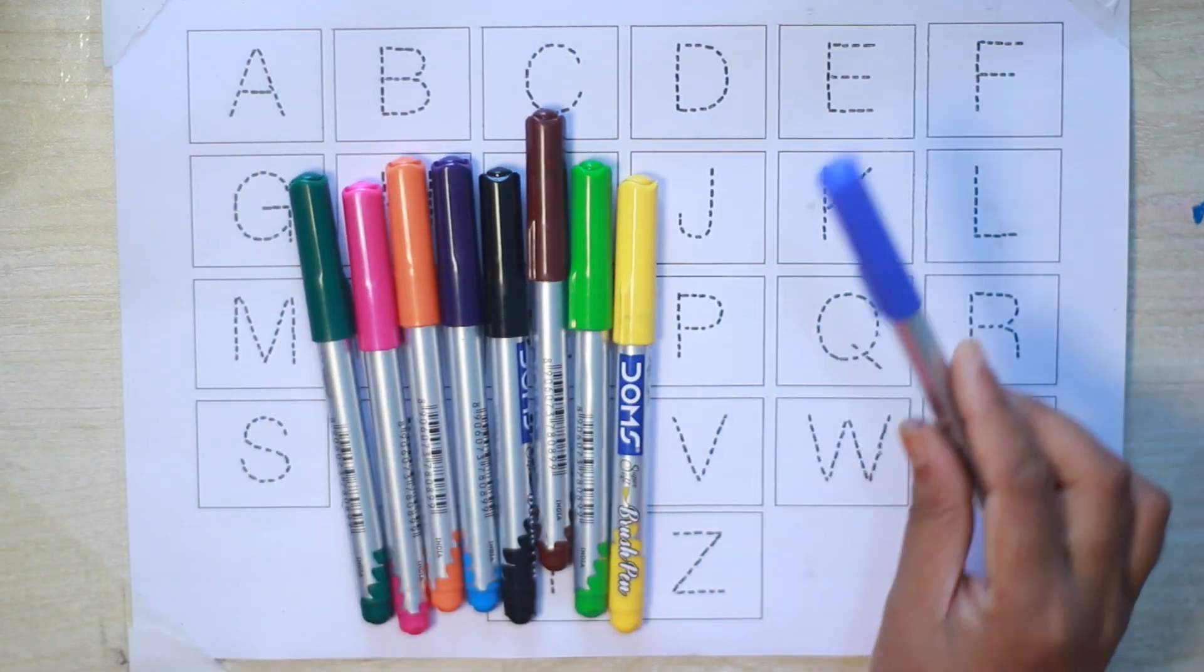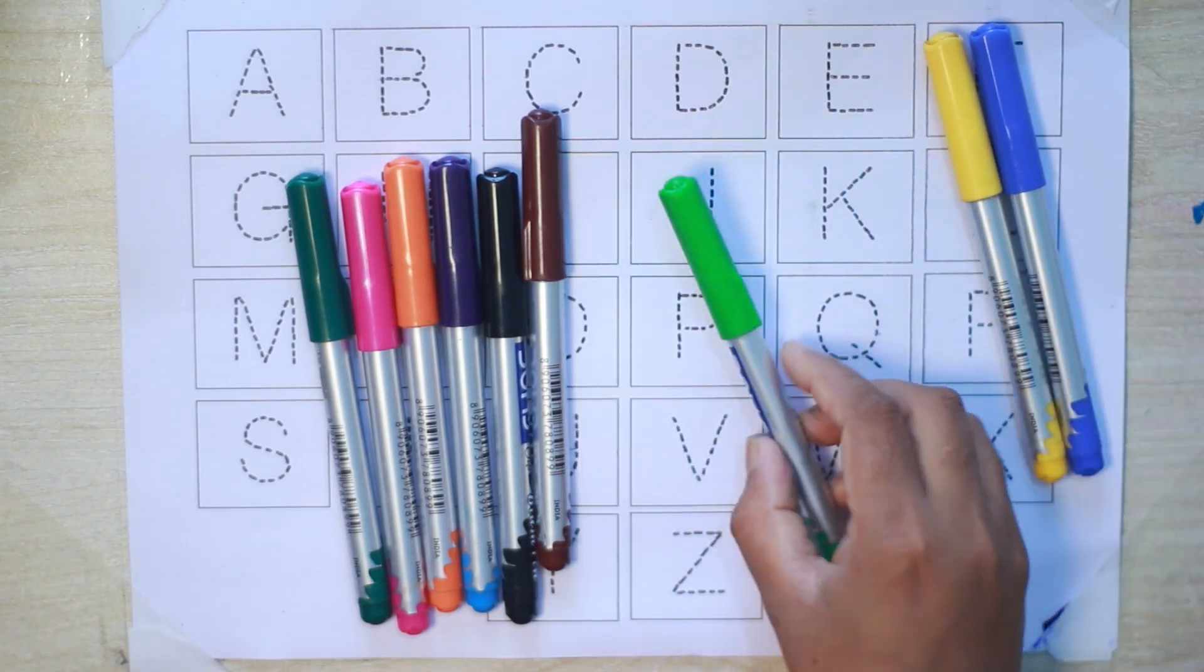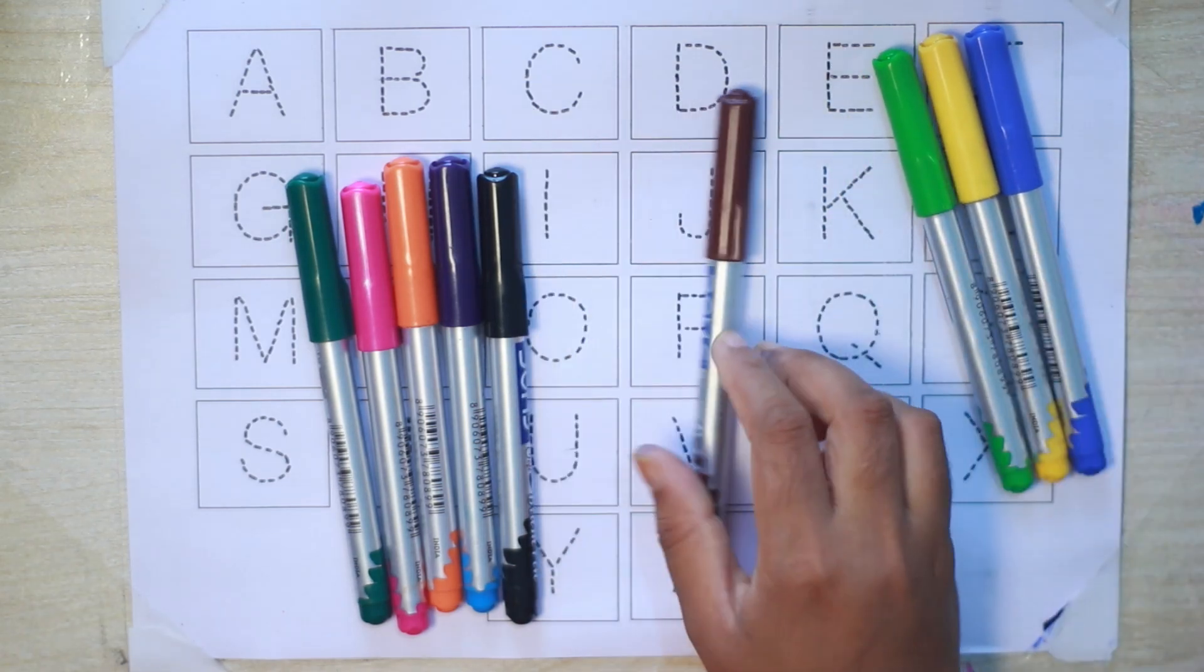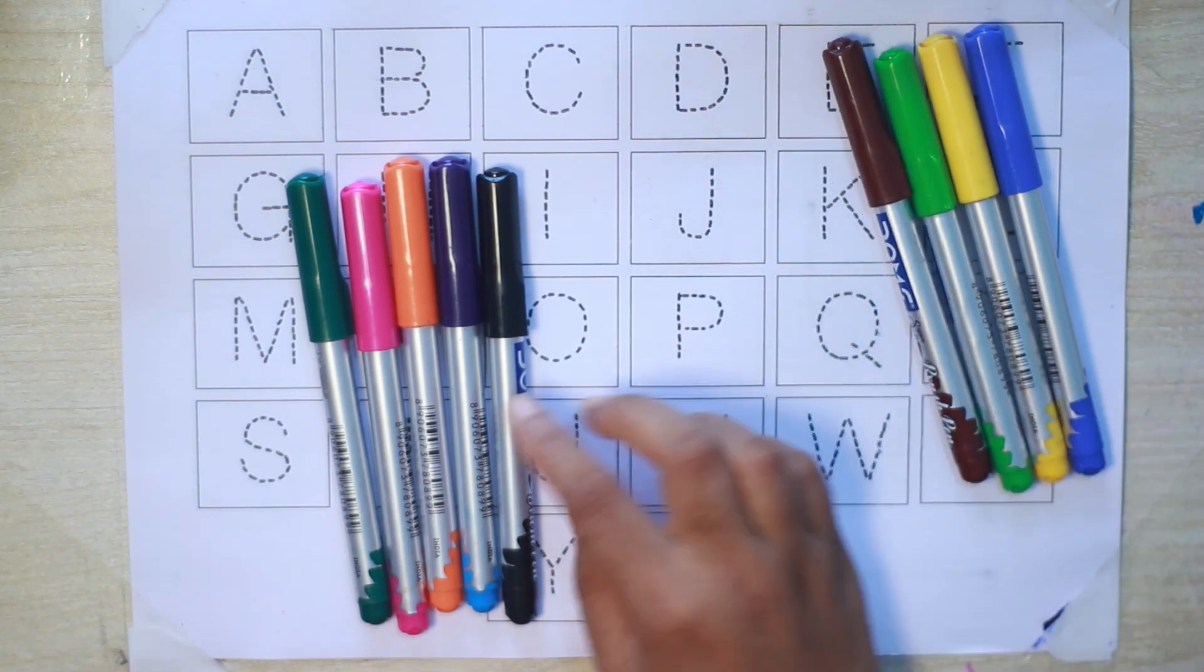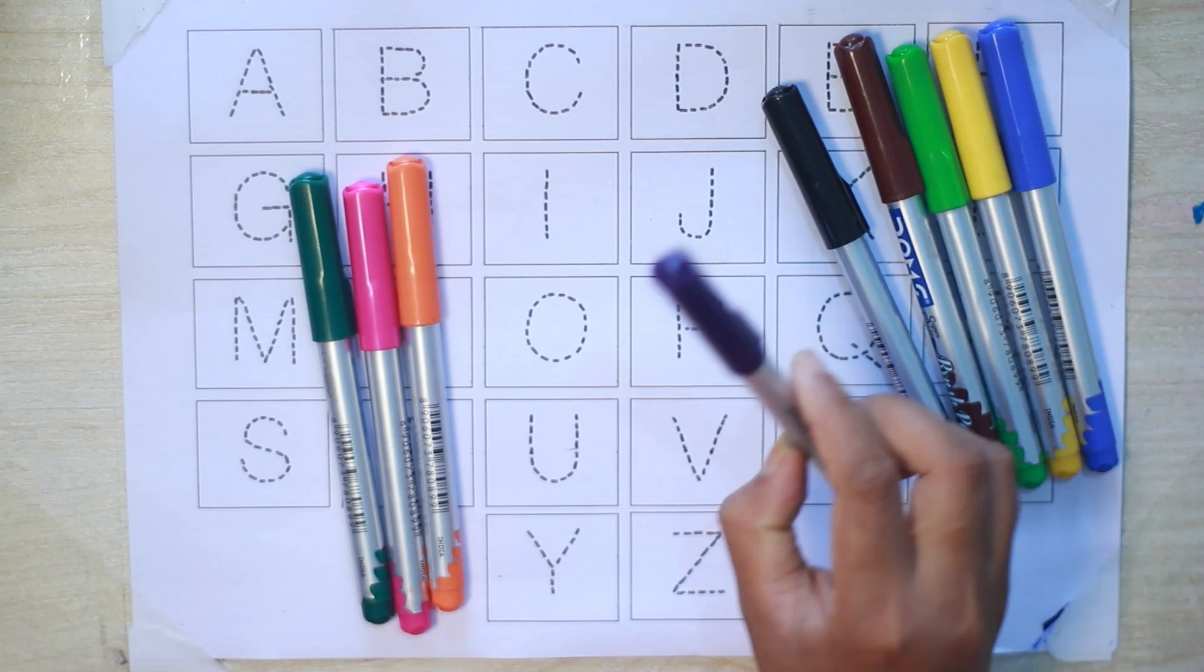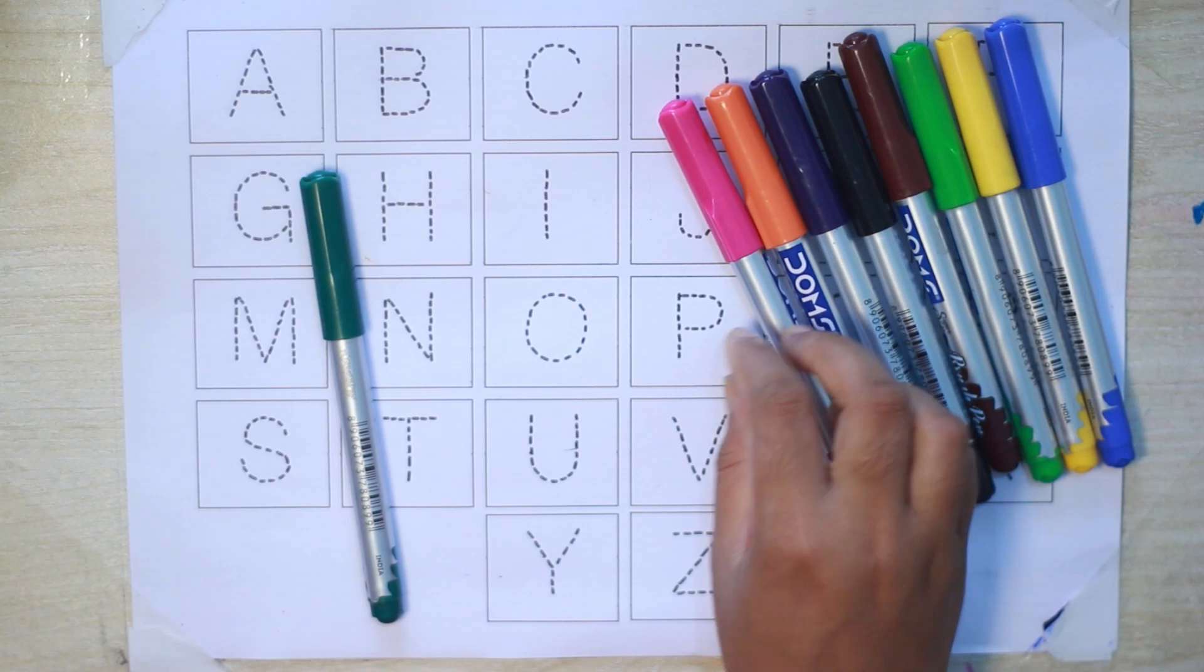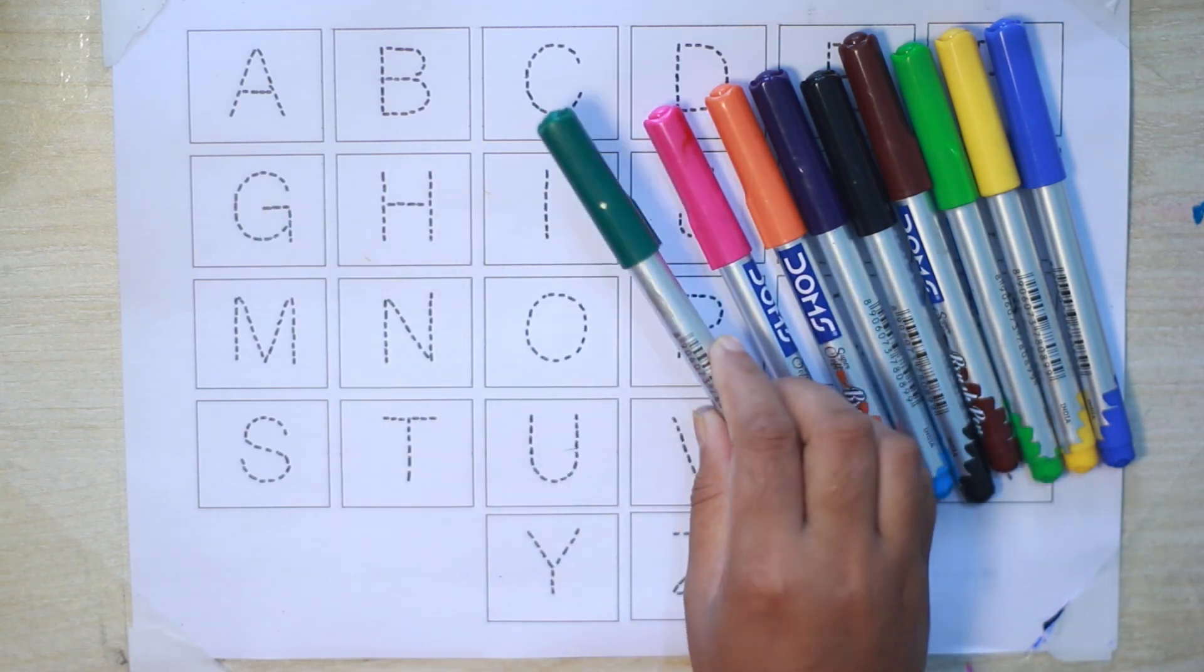Blue color, yellow color, light green color, brown color, black color, violet color, orange color, pink color, and green color. Let's start.